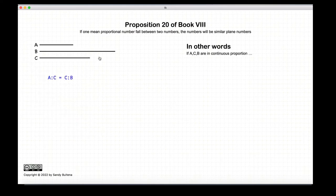So what does Proposition 20 state? It states that if A, C, and B are in continuous proportion, then A and B are similar plane numbers. Now, if you recall, a plane number means that A can be constructed by multiplying two other numbers, and B can be constructed by multiplying two numbers, and the fact that they are similar means that P is to Q as I is to J.